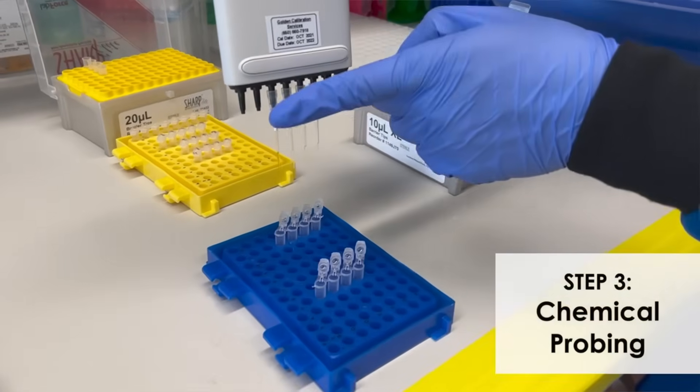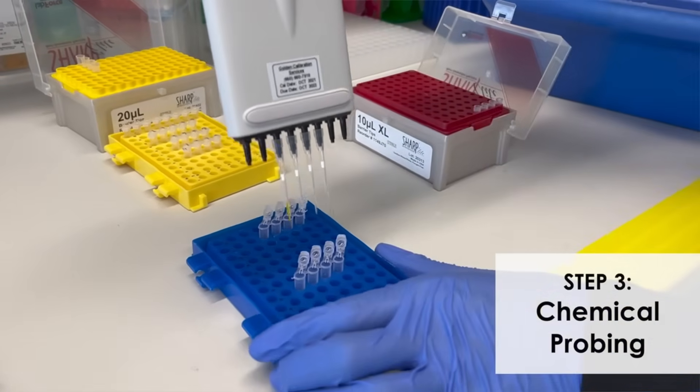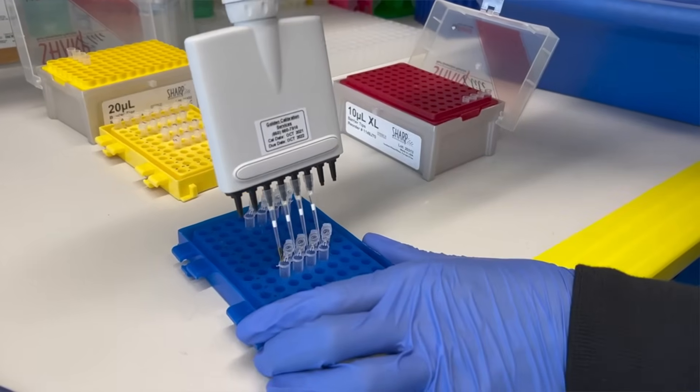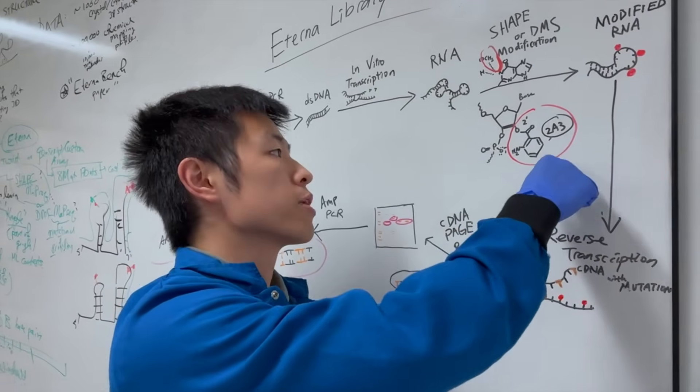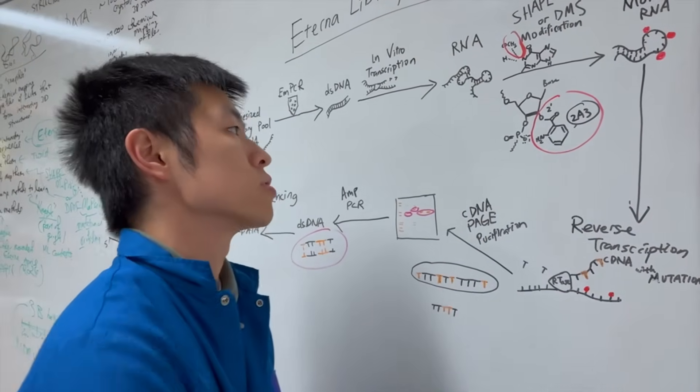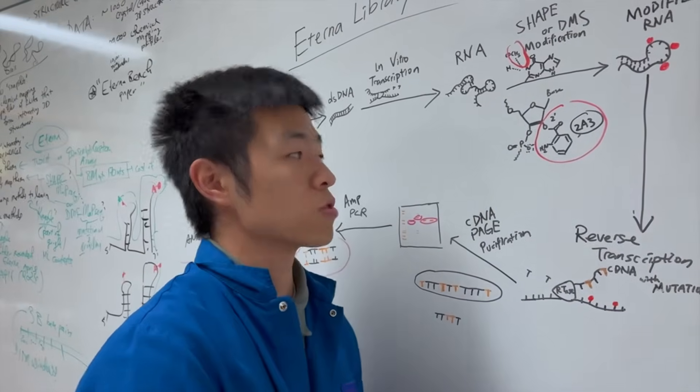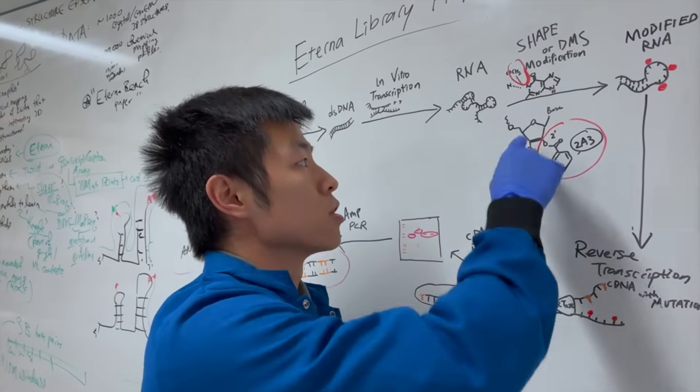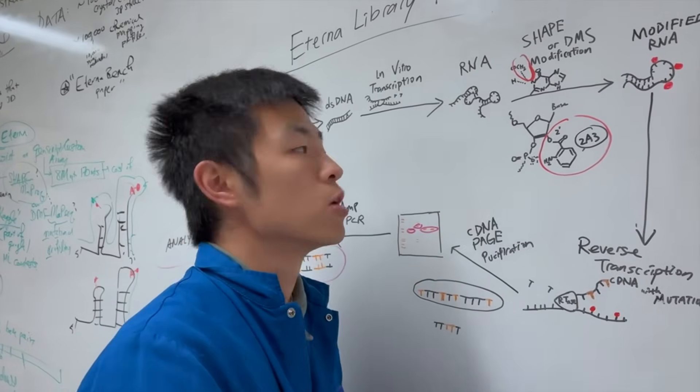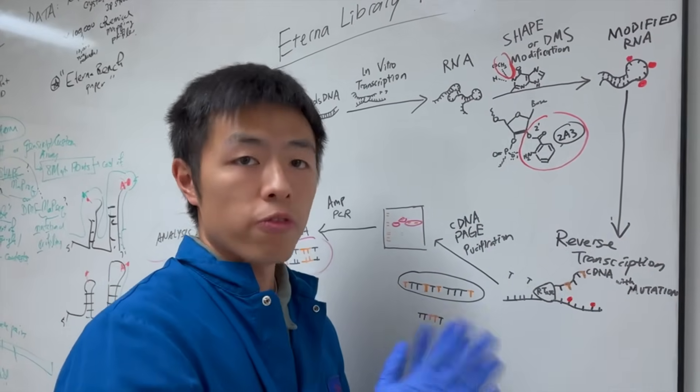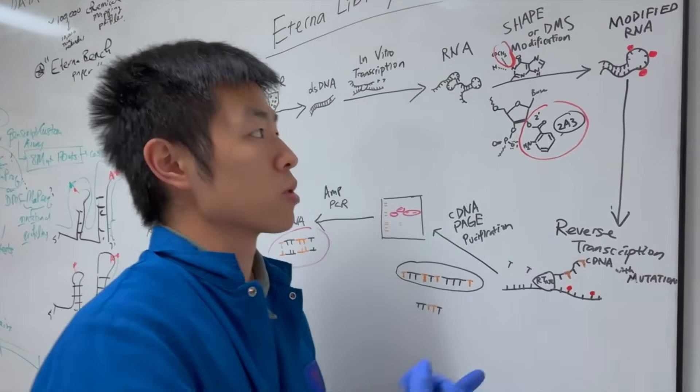We're going to use chemical probes. So, there are different kinds of chemical reagents we're going to use. In the case of SHAPE reagent, here the example showing is the 2A3 SHAPE reagent. Just like other SHAPE reagents, it attaches to the two-prime hydroxyl part of the sugar ring. For the base that's also not base paired, which means this locus is more flexible compared to the base paired ones.